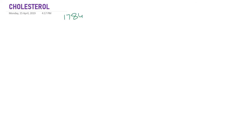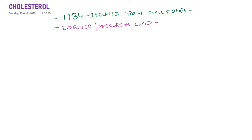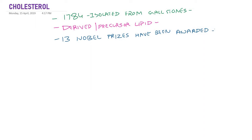In 1784, cholesterol was isolated from gallstone and is classified under a derived or precursor lipid. So far, 13 Nobel prizes have been awarded for the discovery of cholesterol or research associated with cholesterol. An interesting thing about cholesterol is it is not present in vegetable oil — cholesterol is the major sterol in animal tissue, so cholesterol is purely of animal origin.